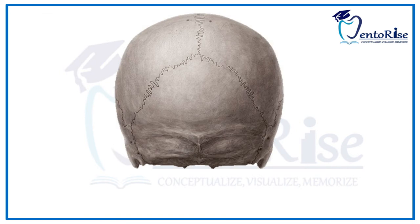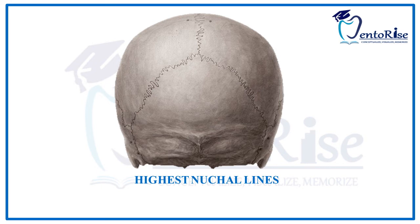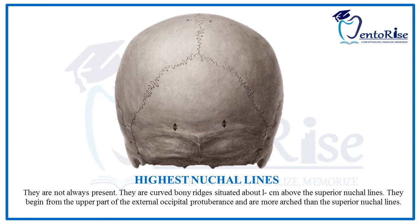Among the three pairs of nuchal lines, the highest nuchal lines are not always present. They are called highest because they are present one centimeter above the superior nuchal lines. They begin from the upper part of the external occipital protuberance and are more arched than the superior nuchal lines. They are marked in the figure with a red dotted line.